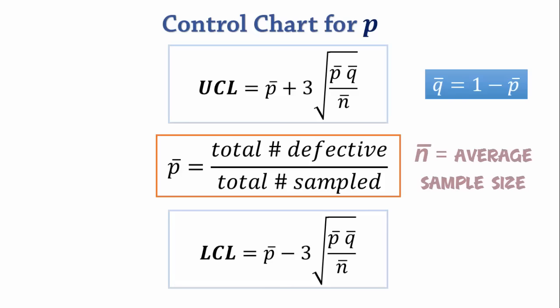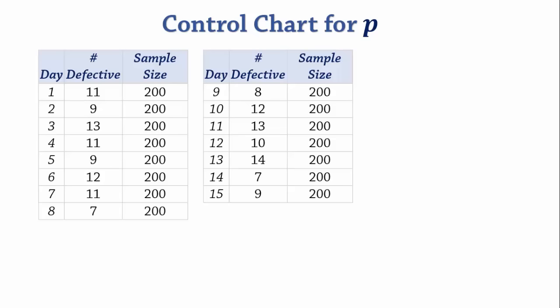For our first example, we consider this process data consisting of the number of defective items in a sample of 200 items collected every day for 15 days. We want to calculate the control limit and determine if the process is in statistical control.